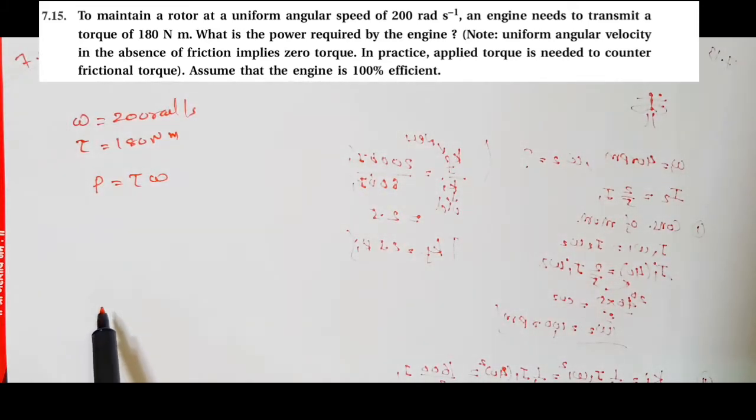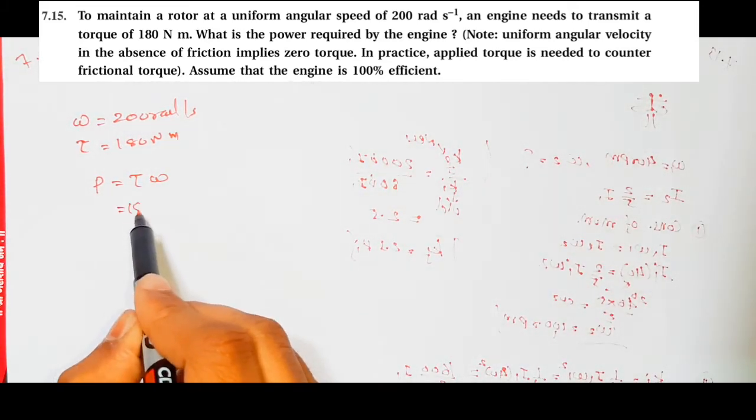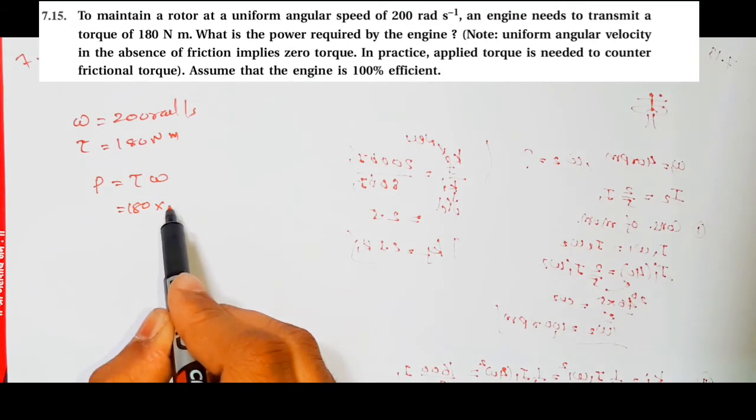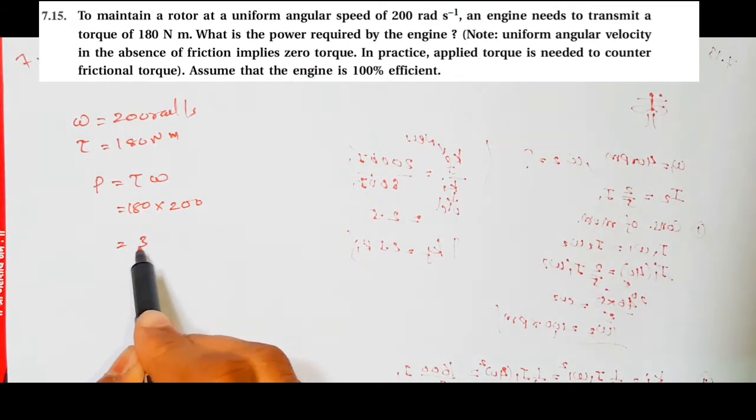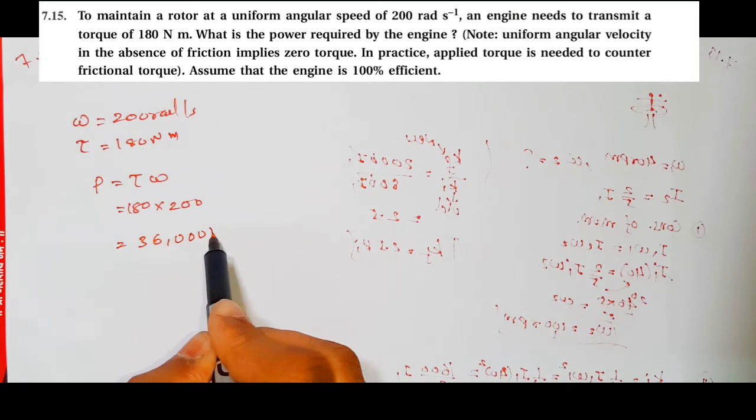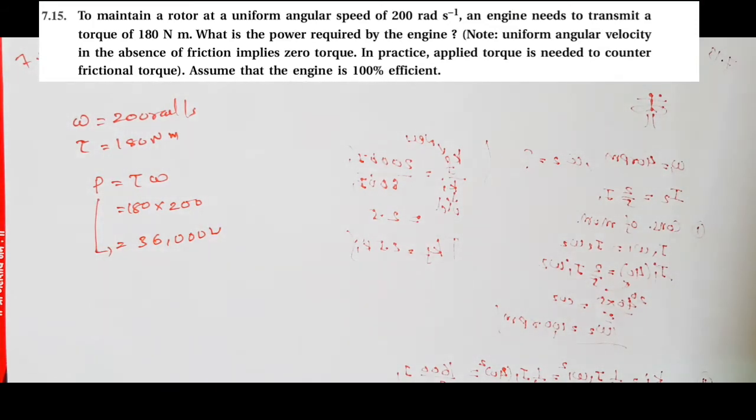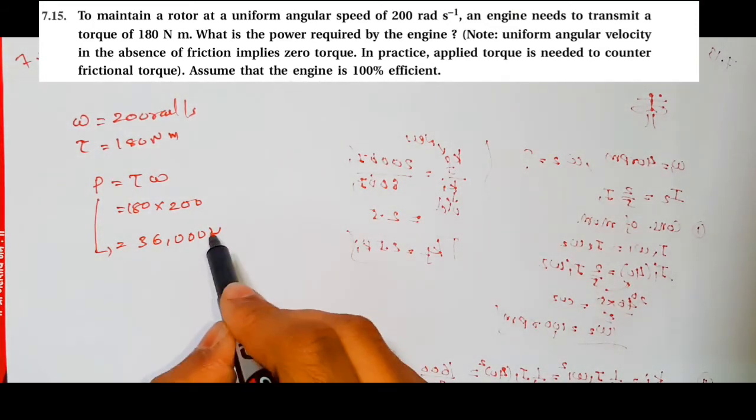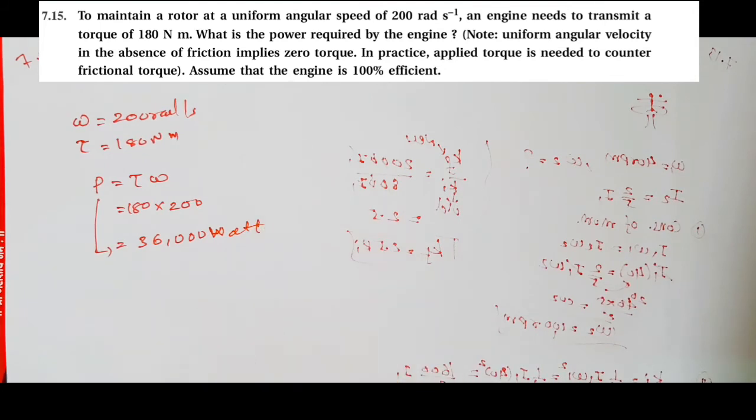So torque is equal to 180 into 200, so simply you can get 36,000 watts. This is the power formula and you do not have to do anything more. Thank you, take care, and bye bye.